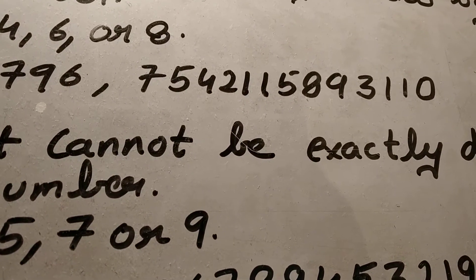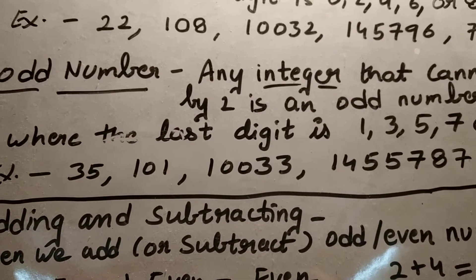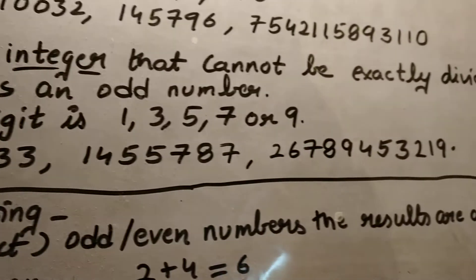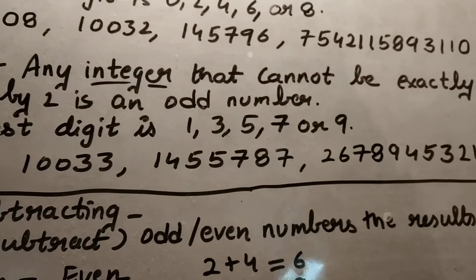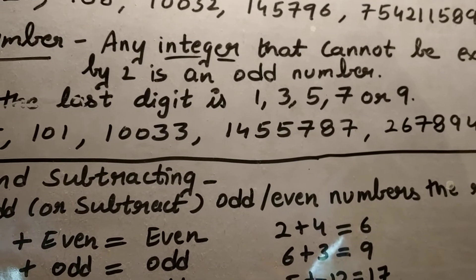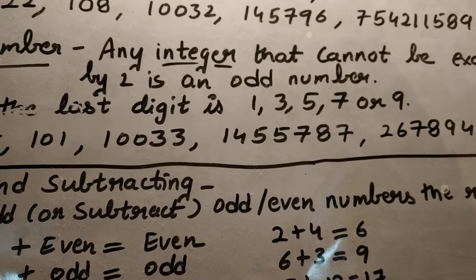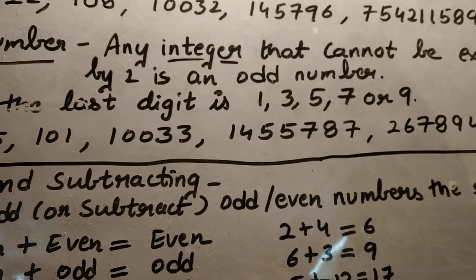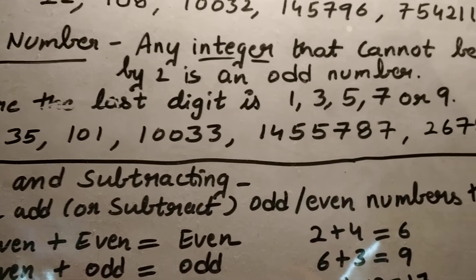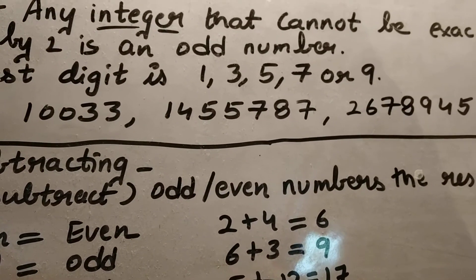In the last example, zero comes in the ones place and zero is also an even number. Now, for odd numbers: any integer that cannot be exactly divided by two is an odd number — it's just the opposite of an even number. All numbers not divisible by two are odd numbers.